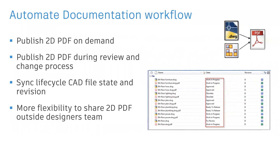Or you can do the publishing on demand — you can right-click on a file, a drawing (it's still only 2D), and say publish a 2D PDF. This is administrative control, so you can actually turn this off if you want as an administrator. But your users, if they need a PDF inside a vault, they can right-click on one and say publish it on demand.